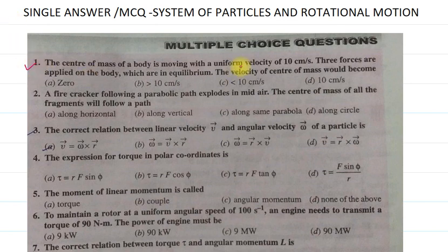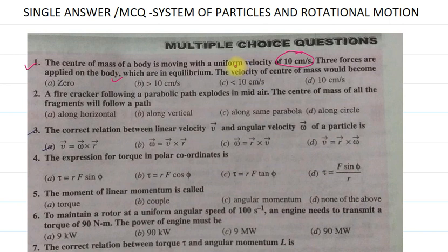The center of mass of a body is moving with a velocity of 10 cm per second. A force is applied on the body and the forces are in equilibrium. So the velocity of the center of mass would become — basically here the center of mass velocity is 10 cm per second, but the force is in equilibrium.